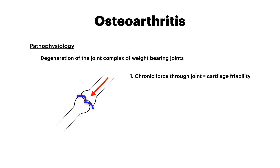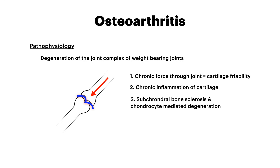Over time, the cartilage becomes friable. Once the cartilage undergoes inflammation, you get subsequent changes in the joint. Subchondrally — the subchondral space being that bony area proximal to the joint — you get sclerosis. Sclerosis just means hardening and thickening, so the bone starts to harden and thicken. At the same time, chondrocytes mediate further degeneration as they're recruited to the area surrounding the cartilage as part of the inflammatory process.